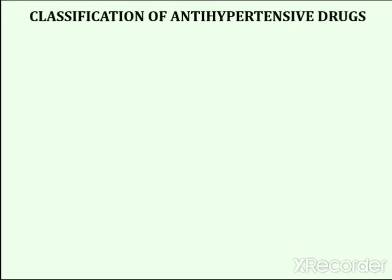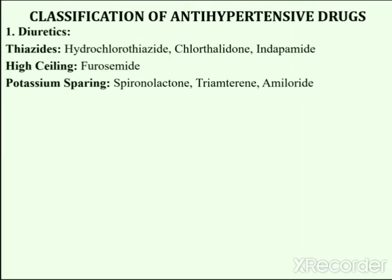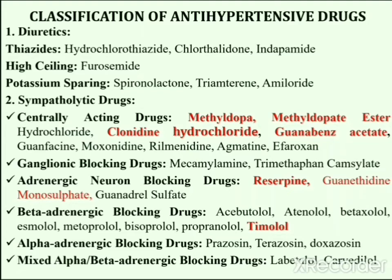Classification of antihypertensive drugs includes several main categories which are further subdivided into subcategories. The first main category is diuretics, which are agents that help the kidneys inhibit sodium reabsorption in the distal convoluted tubules, ascending limb, and loop of Henle. The second main category is sympatholytic drugs — agents that decrease the activity of the sympathetic nervous system. These are further subdivided into centrally acting drugs, ganglionic blocking drugs, adrenergic neuron blocking drugs, beta adrenergic blocking drugs, alpha adrenergic blocking drugs, and mixed alpha-beta adrenergic blocking drugs.